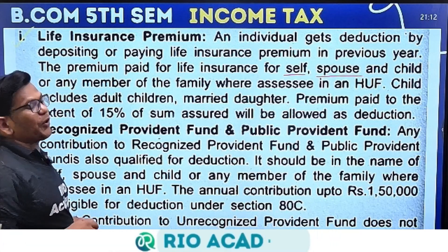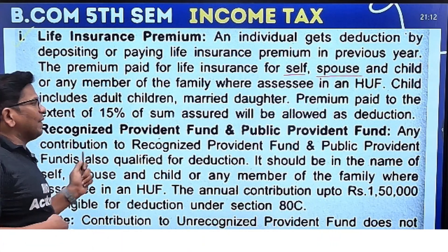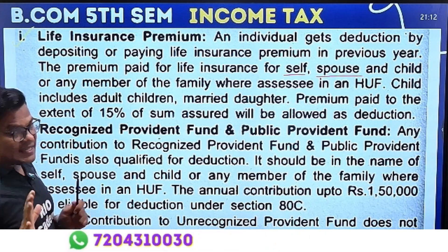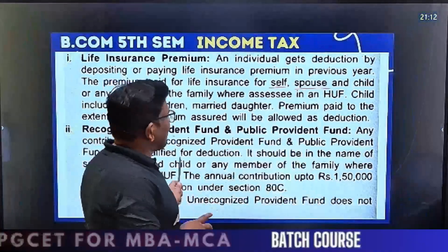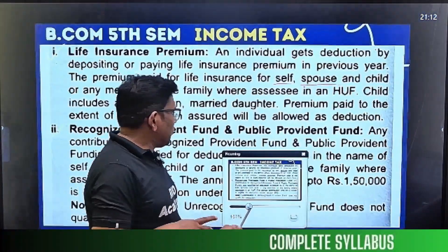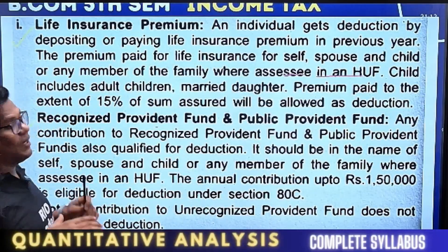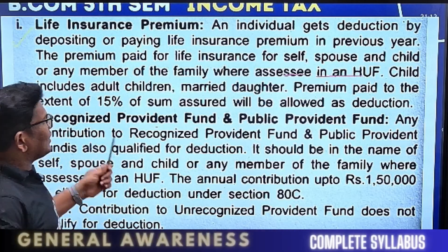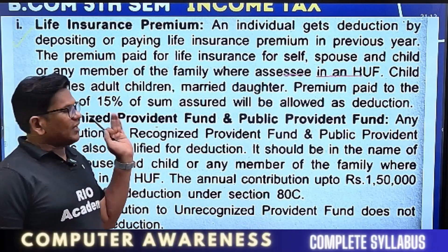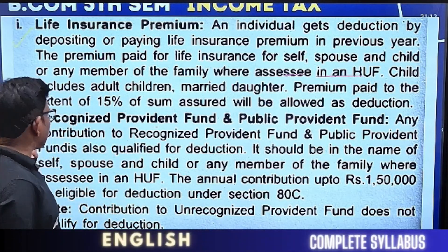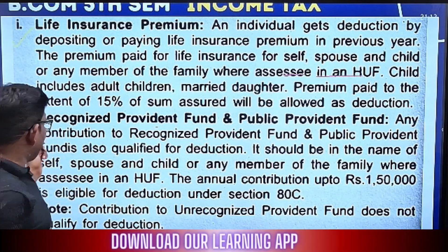Next under 80C — Recognized Provident Fund (RPF) and Public Provident Fund (PPF). Contributions to RPF and PPF qualify for 80C deduction. Any contribution to a recognized Provident Fund or Public PPF is eligible. It should be in the name of self, spouse, child, or any family member.